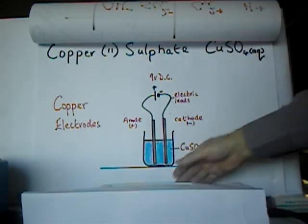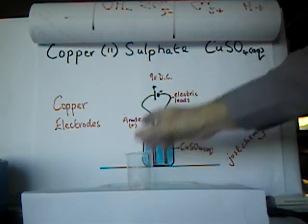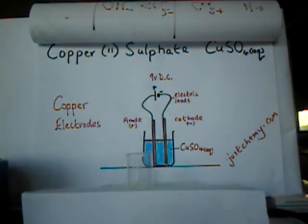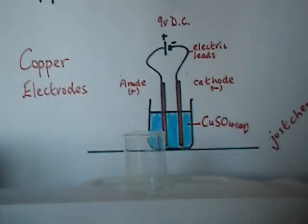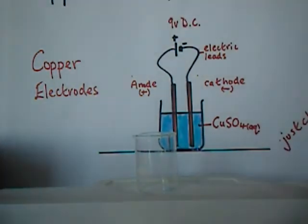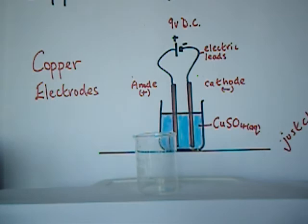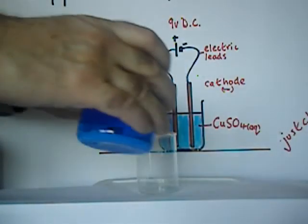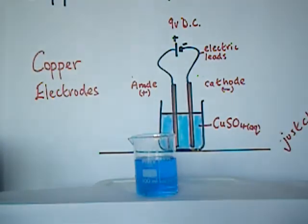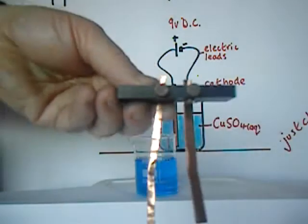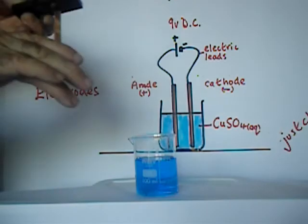So if I take a small beaker here, I'm going to pour some solution onto this. Maybe bring this in a little bit closer. Now, I'll pour some copper sulfate solution into that beaker. Now I have my electrodes here, as you see. I'm going to immerse those into the electrolyte.